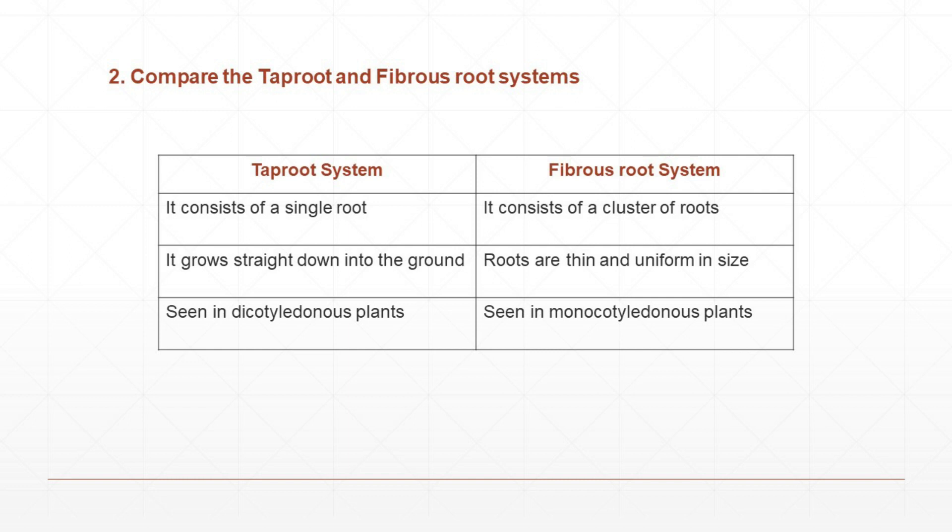Short answer 2: Compare the taproot and fibrous root systems. Taproot system: it consists of a single root, it grows straight down into the ground, and is seen in dicotyledonous plants. Fibrous root: it consists of a cluster — meaning a bunch or group — of roots. Roots are thin and uniform in size, and seen in monocotyledonous plants.